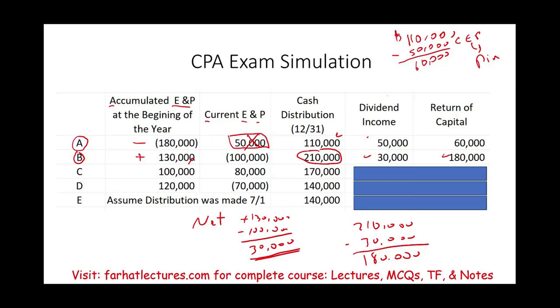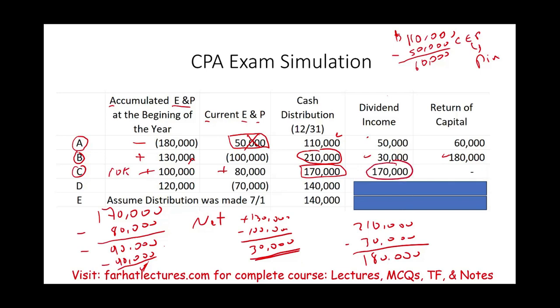Let's take a look at the third scenario, C. Positive AEP, positive CEP. And we distributed $170,000. Well, guess what? We have plenty of CEP and AEP. But first, what we do, just kind of make sure we are in order. First, we take $170,000 minus $80,000 CEP. And what's left is $90,000. And we have $90,000. We're going to take out the remaining $90,000 from AEP. So simply put, we have $10,000 in AEP remaining after the end of the year. Therefore, the full amount is dividend. None of it is return of capital because we had plenty of AEP and CEP. Matter of fact, we still have AEP of $10,000.